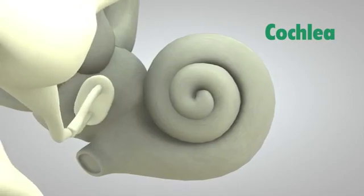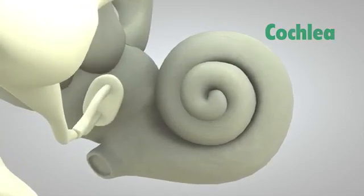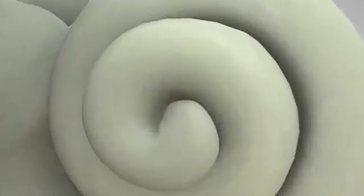The cochlea is shaped like a snail and is the size of a garden pea. It is filled with fluid and the sound vibrations make this fluid ripple, which creates waves.